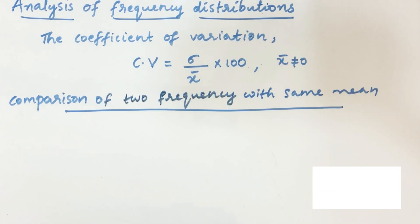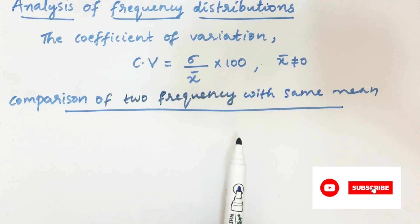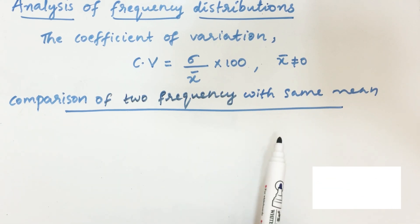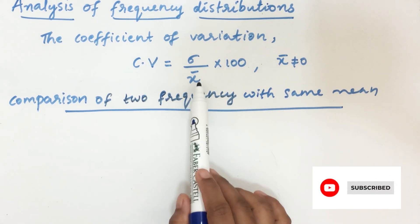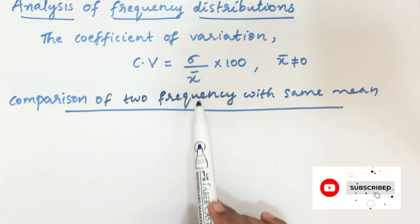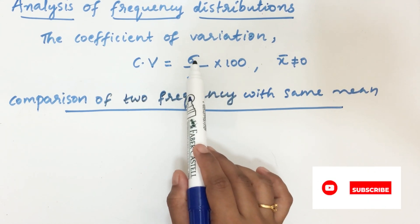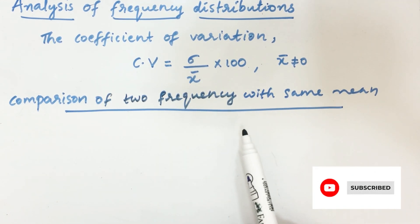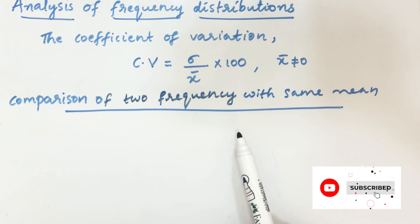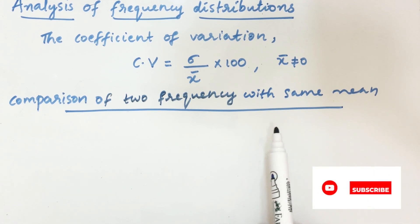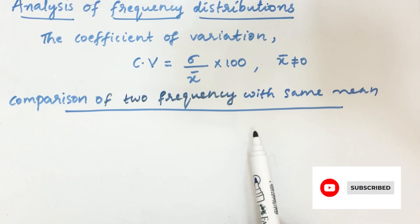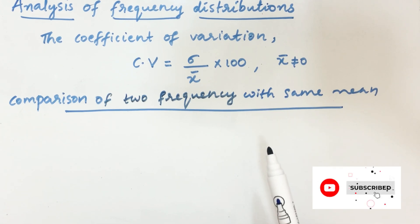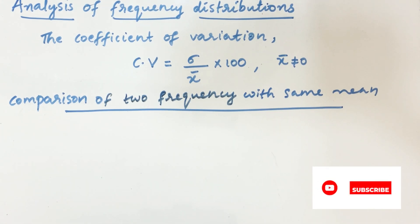Before going to the examples, let us see how to compare two frequency distributions with the same mean. It is very simple — we need not worry about the mean. We can compare using only the standard deviation. For two series with equal means, the series with the greater standard deviation or variance is called more variable, and the series with a lesser value of standard deviation or variance is said to be more consistent.